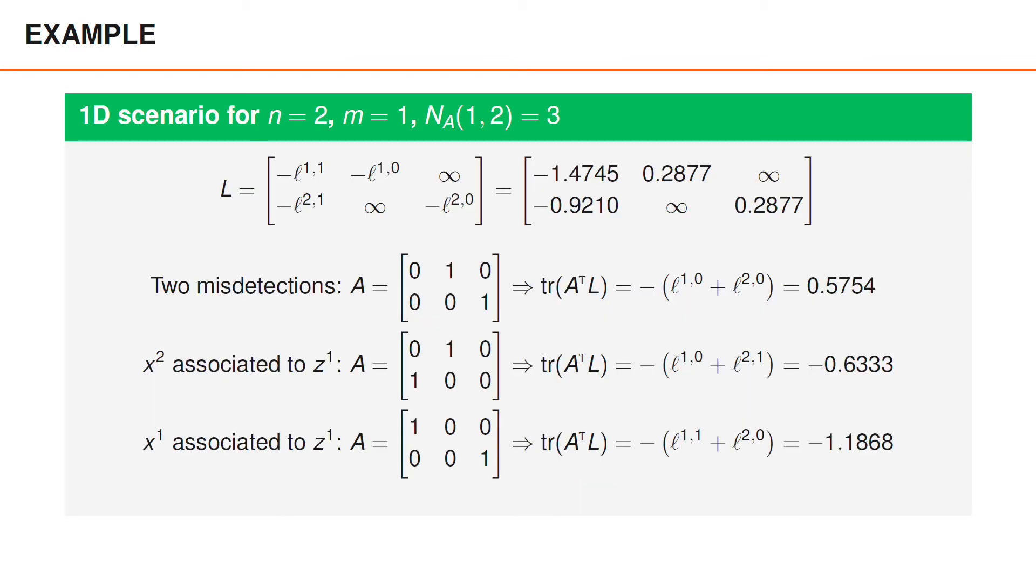Earlier, we found the assignment matrices for the three valid data associations when we have two objects and one measurement. Using the cost matrix, we can compute the cost of the three different assignments. We can see that associating the detection to object one has lowest cost, and two misdetections has highest cost.